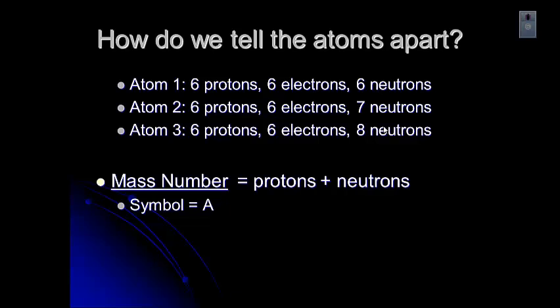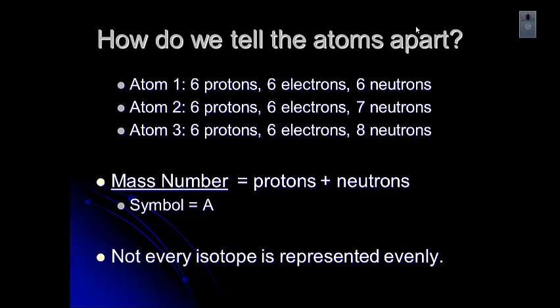One thing to be aware of is that not every isotope is represented evenly. So it's not like it's one-third atom one, one-third atom two, one-third atom three. It is different amounts. It's just what's present in the atmosphere. So we deal with that by using what's called an average atomic mass. That's the mass that is on the periodic table, and we'll look at that in just a minute. Just remember that not every isotope is represented in the same amount.